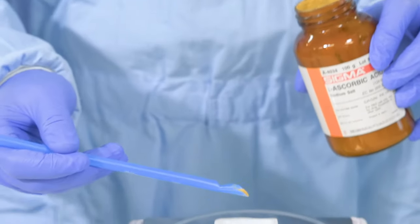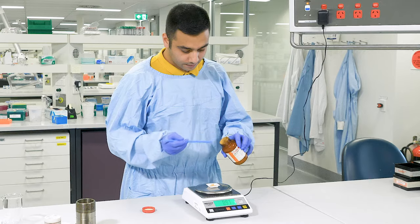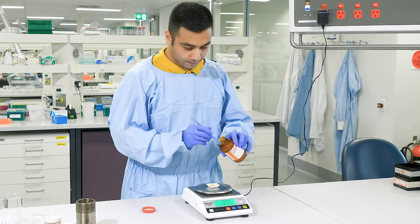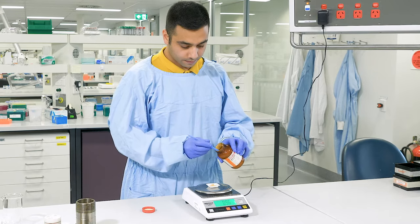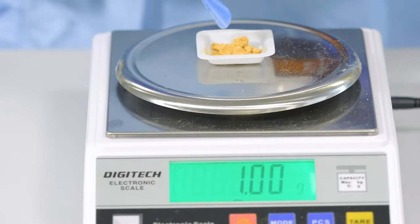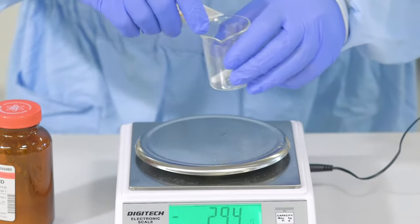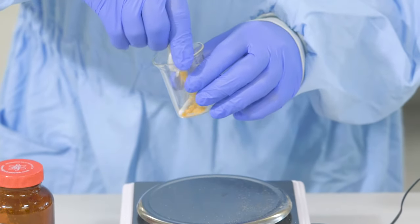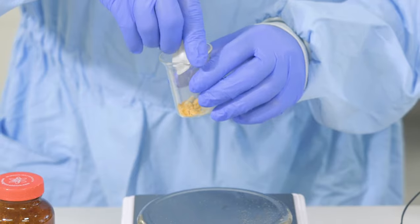Firstly, I weigh 1 gram of ascorbic acid powder. Using the scoop, I add the ingredients until I can see a number as close to 1 gram as I can get on the screen. Now that I have finished weighing the ingredients, I transfer it to the beaker carefully.